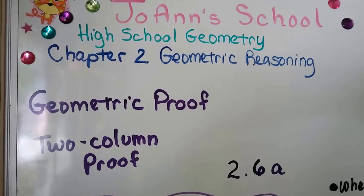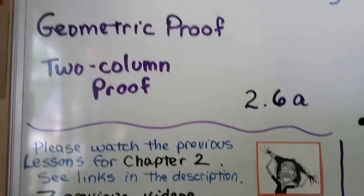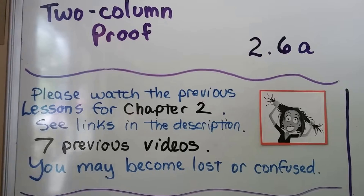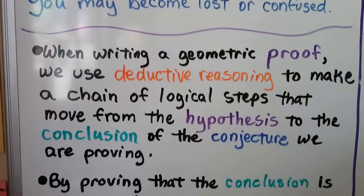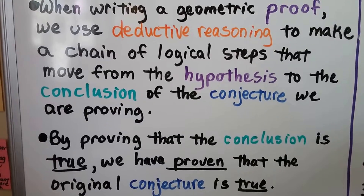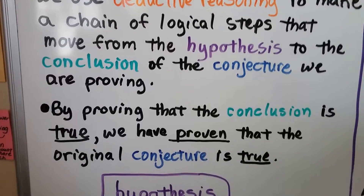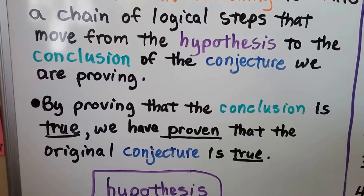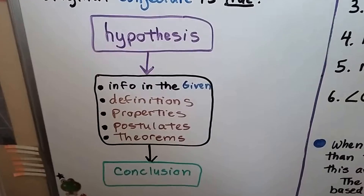Geometric proof, which is a two-column proof — we're at Lesson 2.6a. There are seven previous videos for Chapter 2 that are linked in the description in the Geometry Playlist. When writing a geometric proof, we use deductive reasoning to make a chain of logical steps that move from the hypothesis to the conclusion of the conjecture we're proving. And by proving that the conclusion is true, we've proven that the original conjecture is true. Here I have a flowchart that shows what's going to happen.